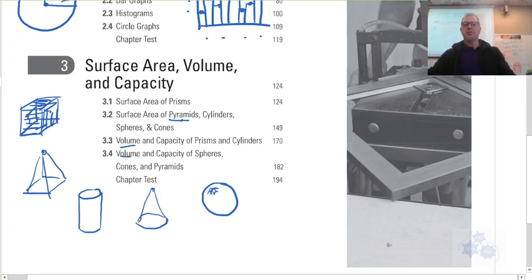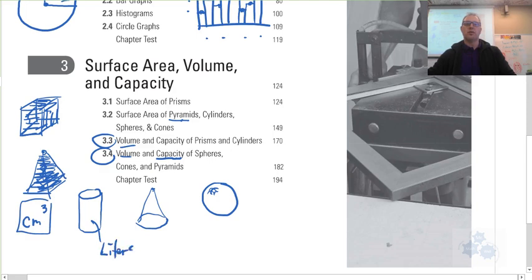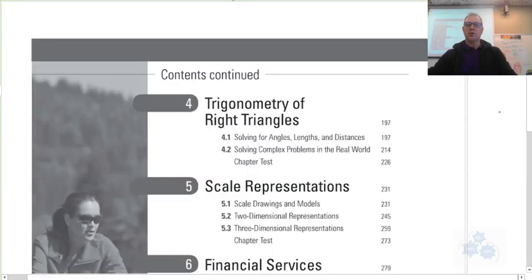Volumes and capacities. You'll have to look at each one of these lessons, 3.3, 3.4, to talk about the different formulas and things like that. But volume is how much space it takes up, right? How much capacity would be the volume of liquid that would go inside that shape, and volume is usually in a length that's cubed. Capacity would be something like liters. It's like the volume of liquid that could fit inside there.